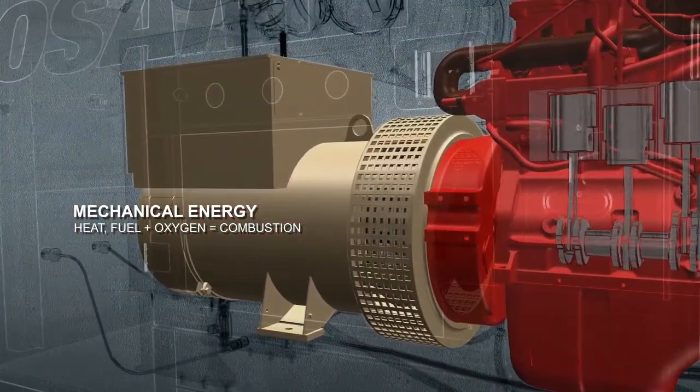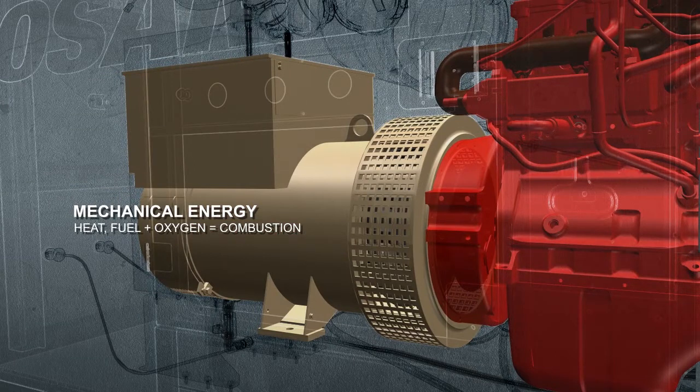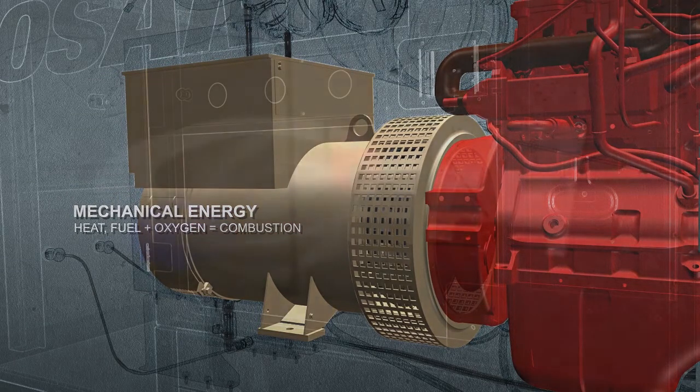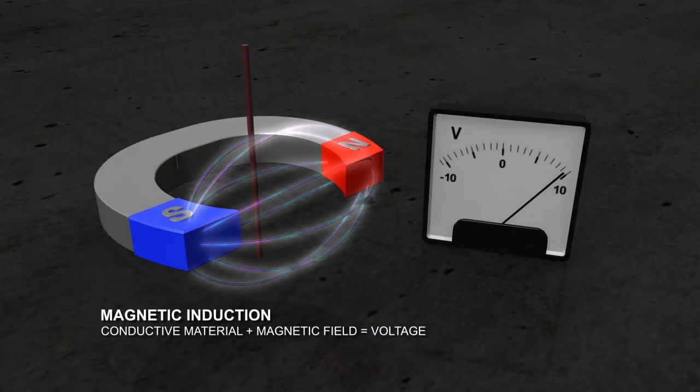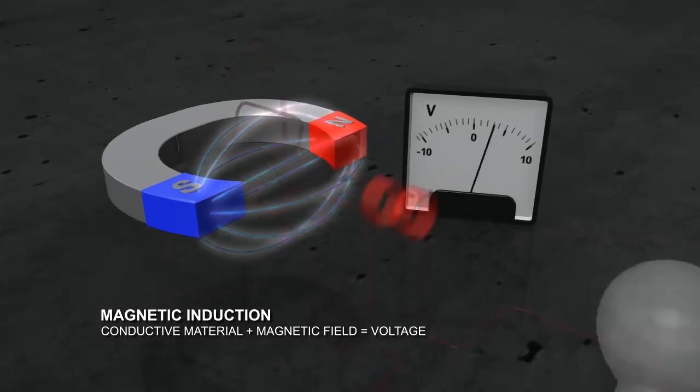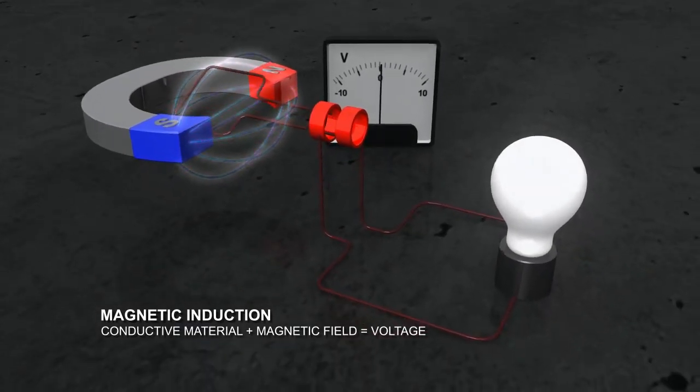An alternator converts mechanical power into electrical energy in a process called magnetic induction. Magnetic induction occurs when a conductive material such as a copper wire passes through a magnetic field and voltage is produced. If the wire is connected in a complete circuit, the power can be transmitted.